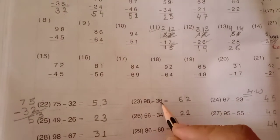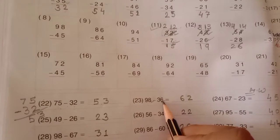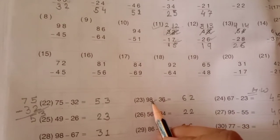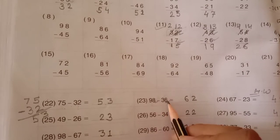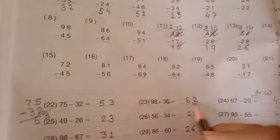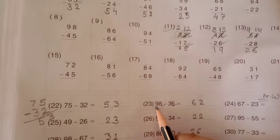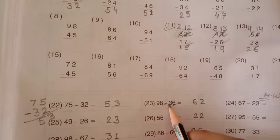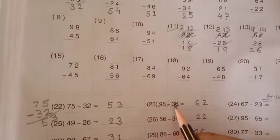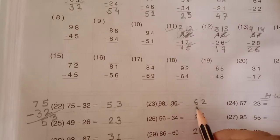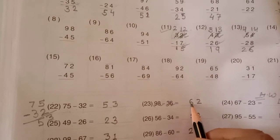आप last digit से subtraction कर सकते हैं. यहाँ पर last digit 8 है और यहाँ पर last digit 6 है. तो 8 में से 6 minus करोगे — यहाँ पर कितना आएगा students? It is 2. अब आगे वाले number में 9 है और यहाँ पर 3 है. तो 9 में से 3 subtract करने — how much remaining here? It is 6.